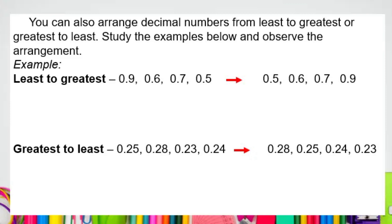You can also arrange decimal numbers from least to greatest or greatest to least. Study the examples below and observe the arrangement. The first arrangement starts from the smallest value to the greatest value, while the second arrangement starts from the biggest one to least.